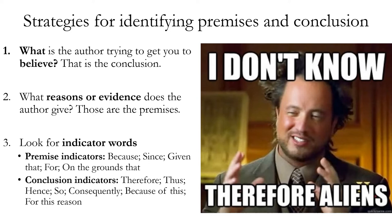Conclusion indicators include words such as 'therefore' or 'thus' — those are the two most common. Other conclusion indicators are 'hence,' 'so,' 'consequently,' 'because of this,' or 'for this reason.' Notice the seeming similarity between just the word 'because,' which is a premise indicator, and 'because of this,' which is a conclusion indicator. When the word 'because' occurs alone before a proposition, it's a premise indicator. When the whole phrase 'because of this' or 'for this reason' occurs before a proposition, it's actually indicating a conclusion.